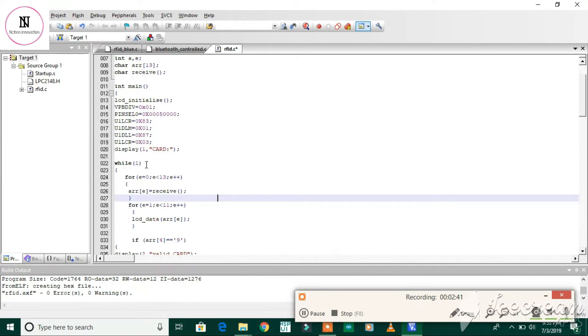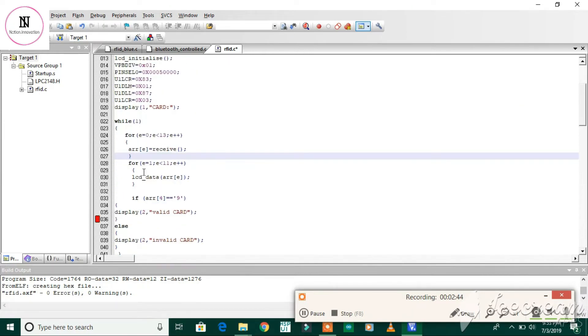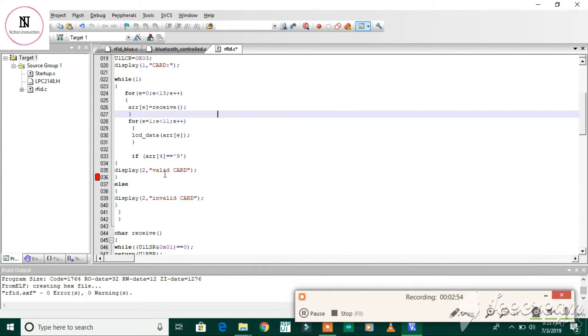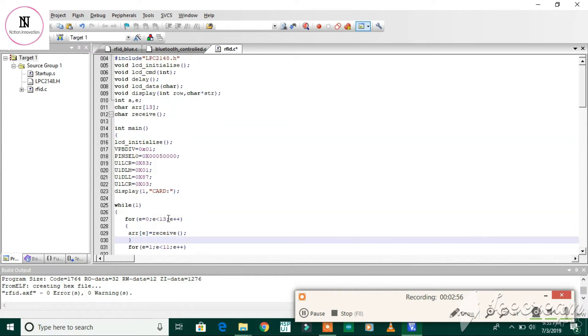Mainly, by using this array and passing it through the UART, and checking whether the particular bit is matching or not, we can determine if the card is valid. This is the interfacing of the RFID module.